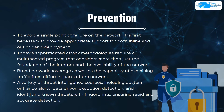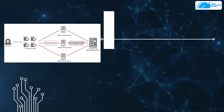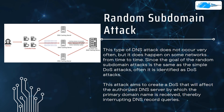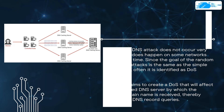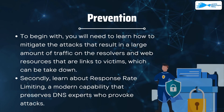Number six on our list is the random subdomain attack. This type of DNS attack does not occur very often but does happen on some networks. Since the goal of this attack is similar to a simple DDoS attack, it is often identified as a DDoS attack. The attack aims to create a DDoS that affects the authoritative DNS server through which the primary domain name is received, thereby interrupting DNS record queries.